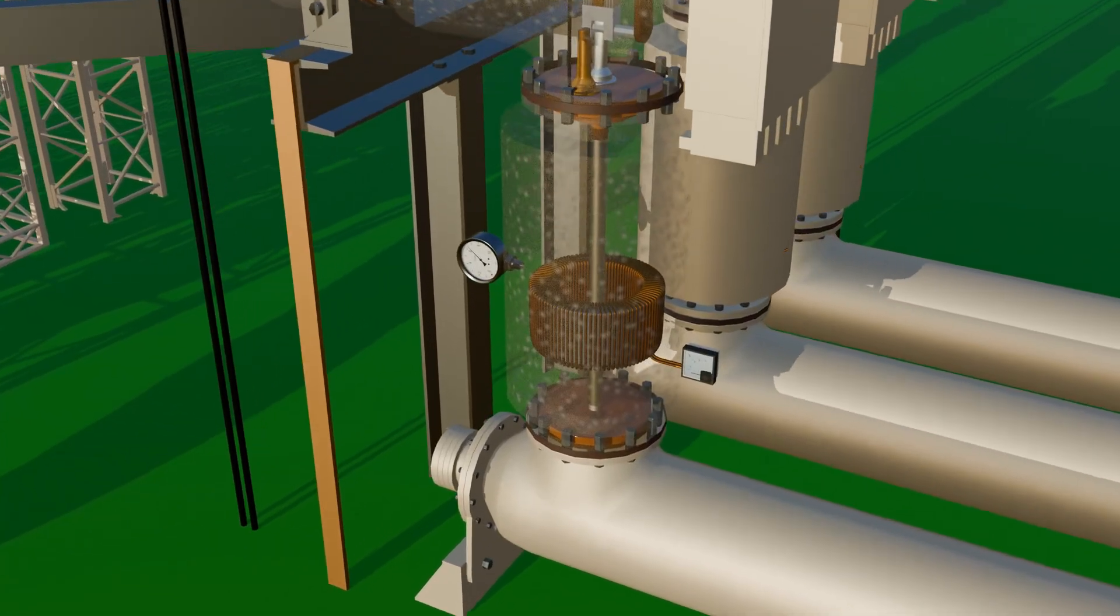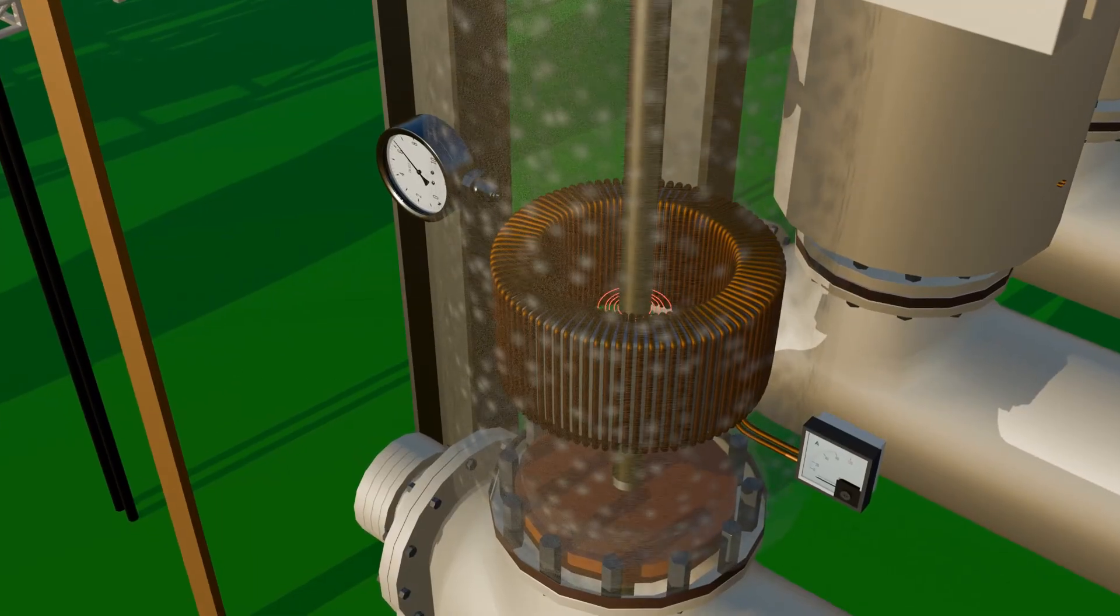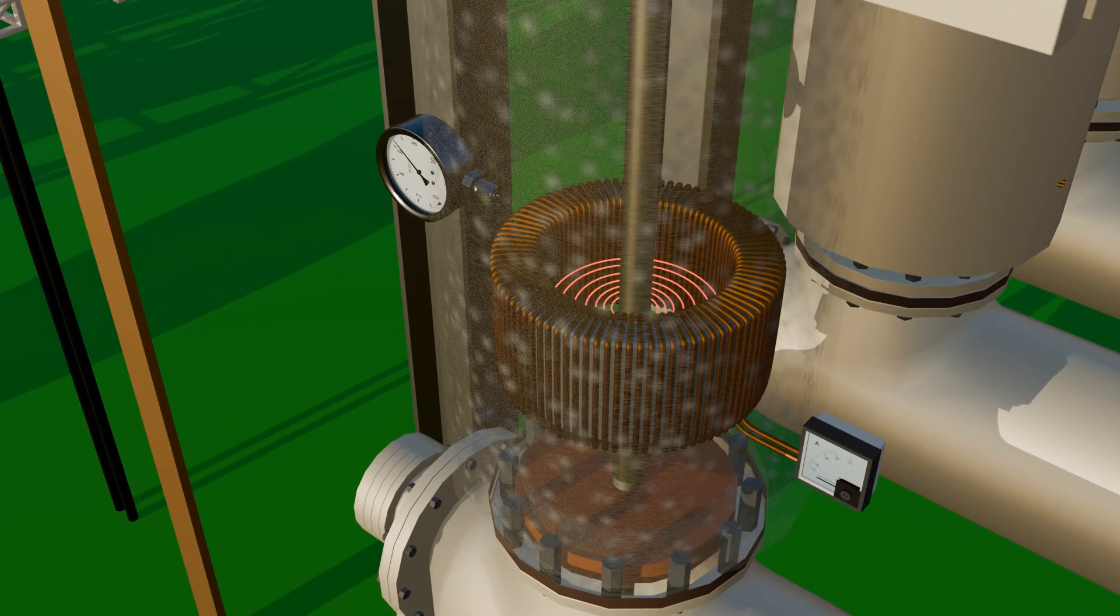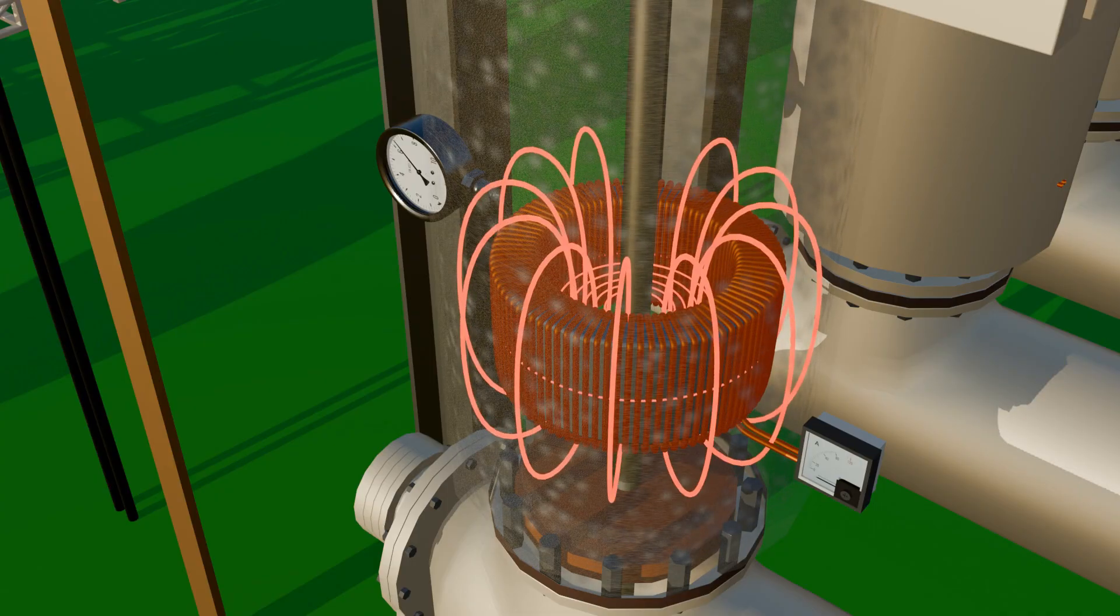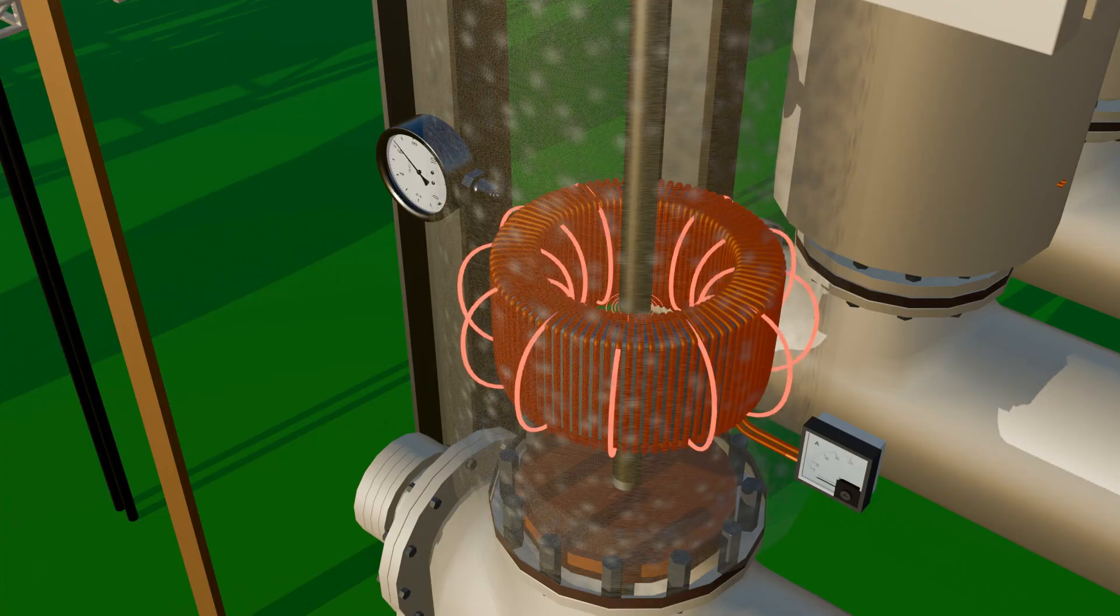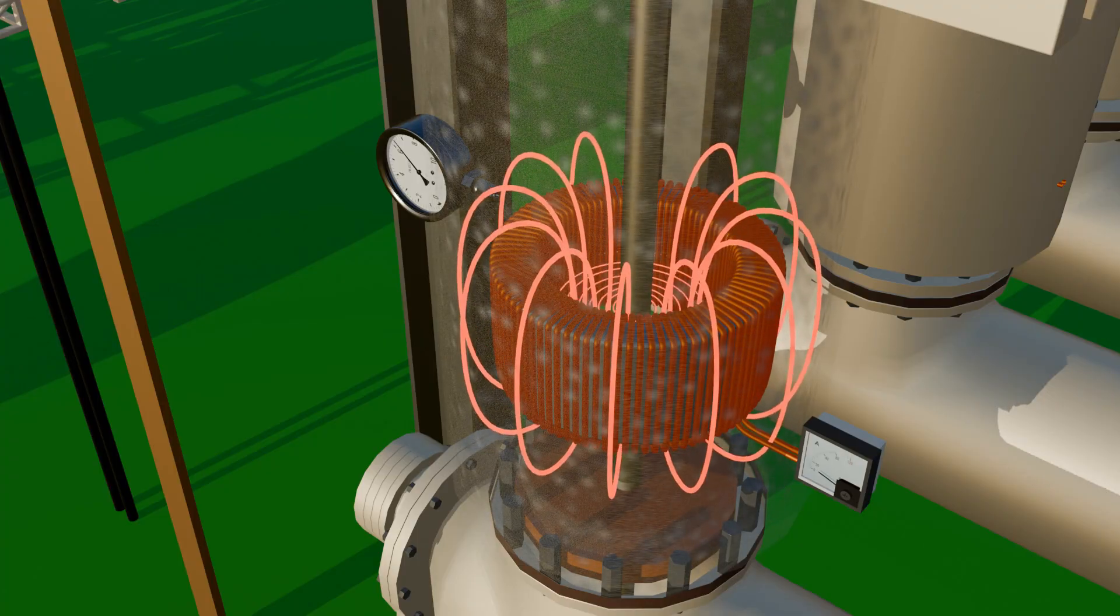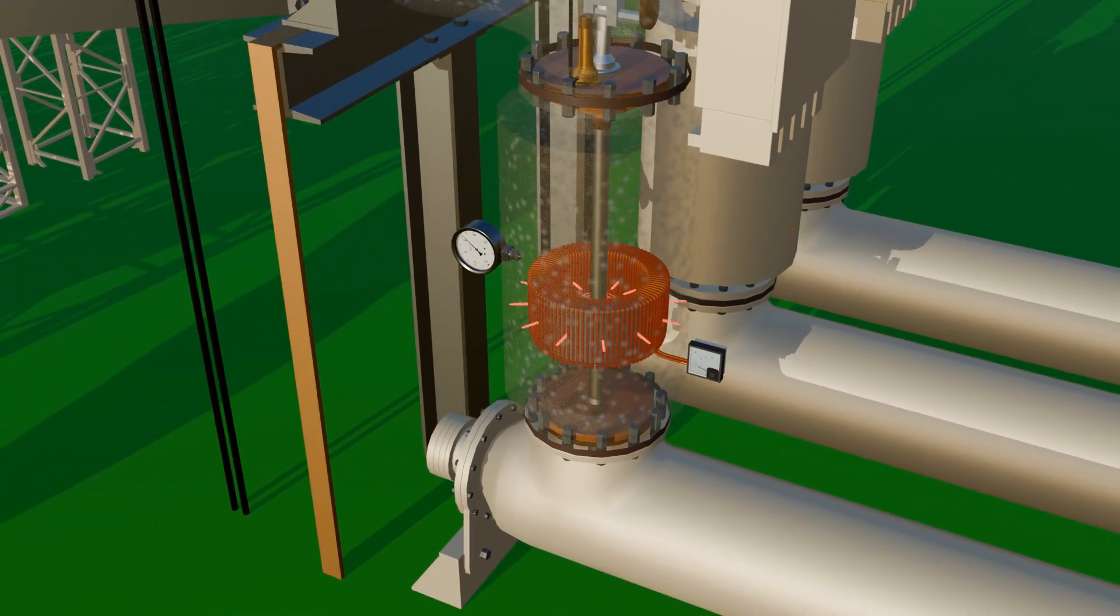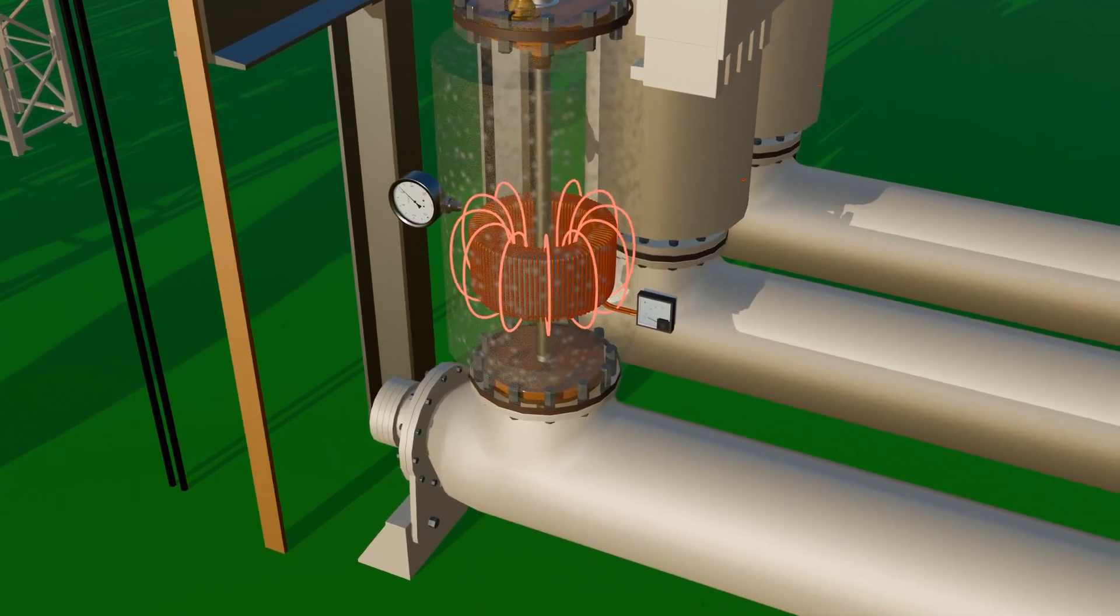After the isolator comes the CT block, the current transformer, which is used to measure current. In a CT, the main conductor itself acts as the primary winding, and around it a toroidal secondary winding is placed containing a very large number of turns. Because of this high turns ratio, the output is reduced to about 5 amperes, which can then be measured safely with standard meters. The current transformer also measures fault current. When a fault occurs, the current rises sharply. The CT detects this rise and sends a signal to the circuit breaker.